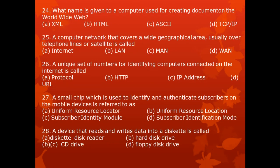Question 24. Which name is given to a language used for creating documents on the World Wide Web? A. XML, B. HTML, C. ASCII, D. TCP/IP — Transmission Control Protocol/Internet Protocol. HTML stands for HyperText Markup Language, and D stands for Transmission Control Protocol slash Internet Protocol.